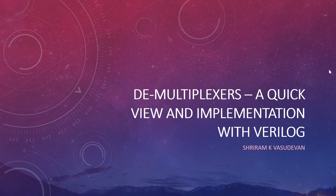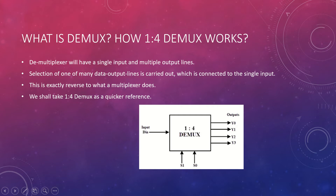Hello friends, welcome back. In this session we'll clearly understand what exactly a demultiplexer is and how to implement it. We are going to understand 1-to-4 DMUX and 1-to-8 DMUX, where the 1-to-8 DMUX will be completely implemented in Verilog for your easier understanding. A demultiplexer has a single input and multiple output lines — the input is called D.